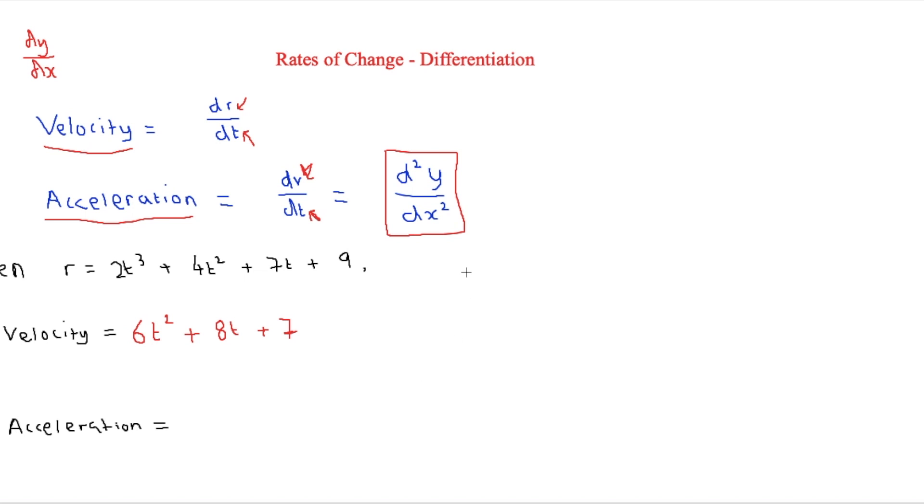And say, for example, we knew that if we added an extra bit when t is equal to 4—that would be seconds, for example—then we would just substitute 4 in here. So then we have 6 times 4², which is 16. So 6 times 16 is equal to 96, plus 8 times 4 equals 32, plus 7.